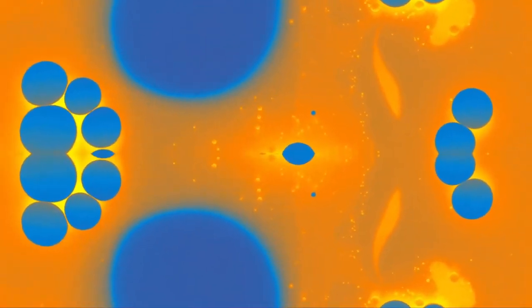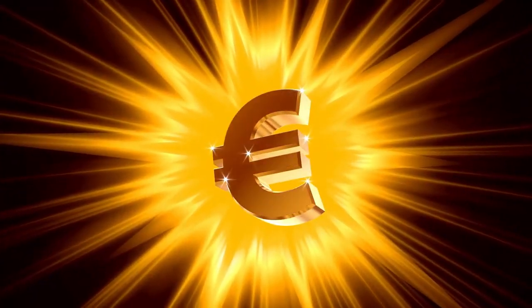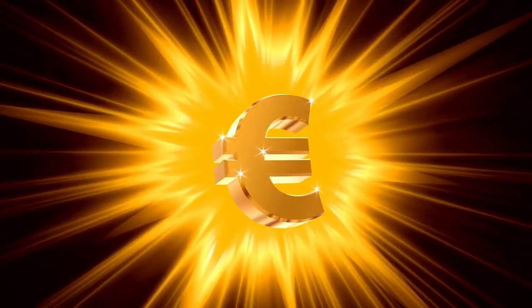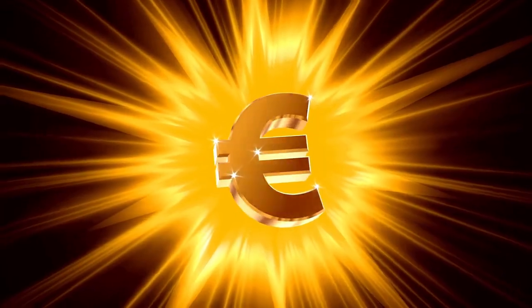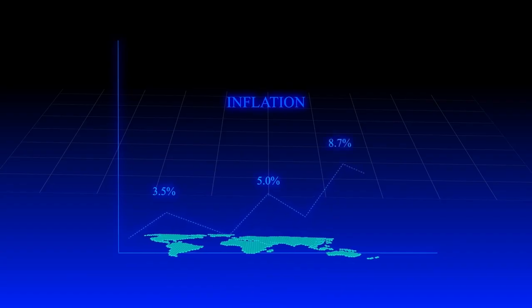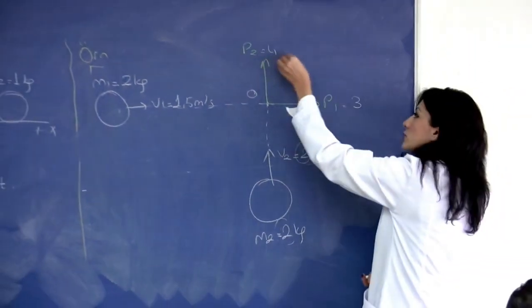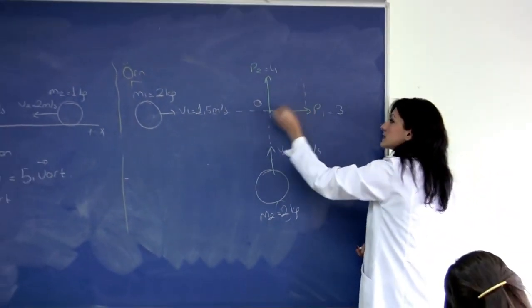Despite its appeal, eternal inflation has limitations. It's eternal only into the future, not into the past. In fact, it's been demonstrated that inflationary spacetime doesn't extend into the past infinitely and must have originated from a prior non-inflationary and possibly singular state. The issue of past time-like incompleteness can't be avoided by considering alternatives like bouncing cosmologies or cyclic cosmologies, as they face similar challenges.